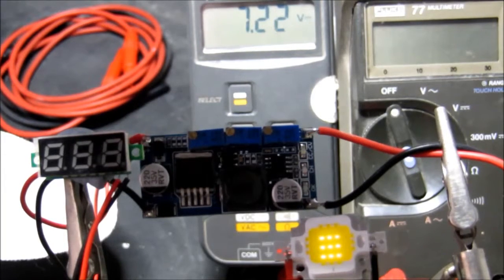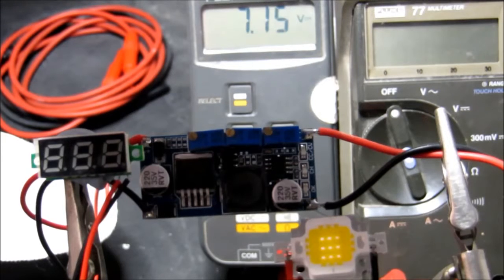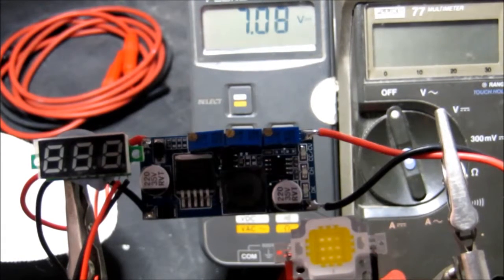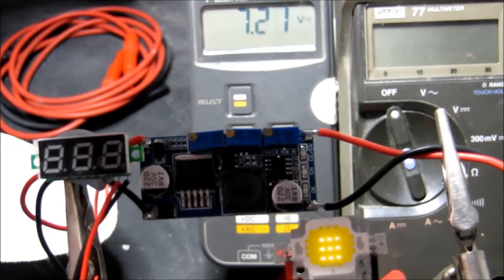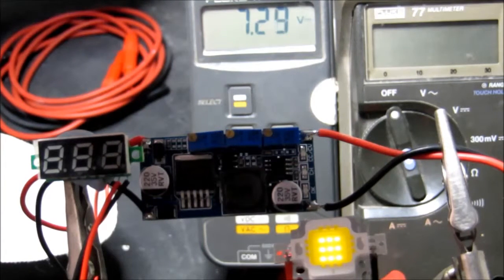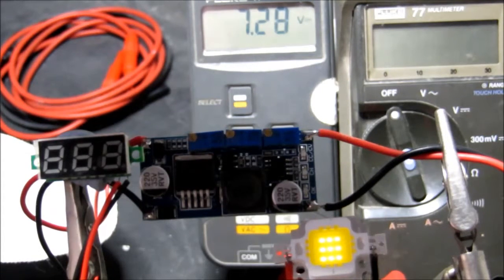Perhaps also worth mentioning that there's a very crude measure of the quality of LEDs - the point at which they all start to light up. Here we can see that pretty much they all start at the same time, which is a rough measure of quality. If you get some really cheap and nasty LEDs, you'll see that they all strike at different voltages, and that's not so good.